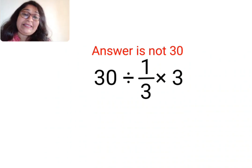Now why like that? See, we have 30 divided by 1 upon 3 multiplied by 3. So this looks so easy, right? 1 upon 3 multiplied by 3 get cancelled. So answer is 30 divided by 1.